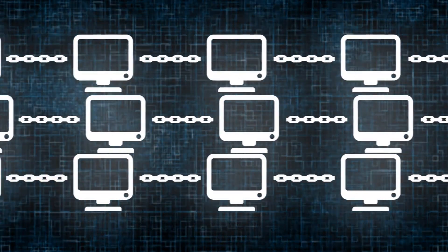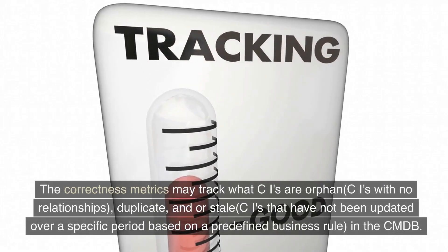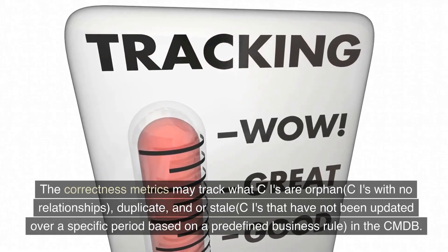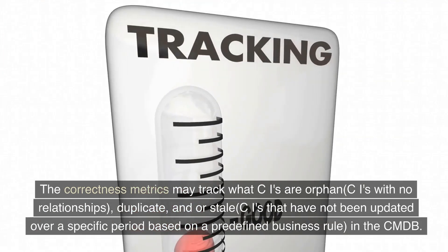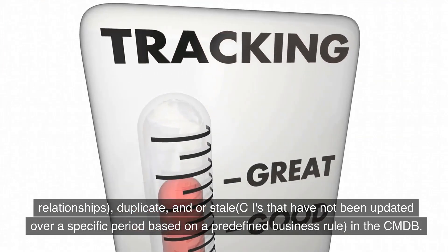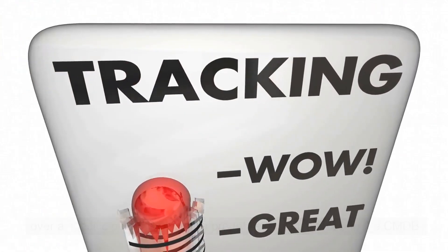The correctness metrics may track what CIs are orphaned, CIs with no relationships, duplicate, and or stale, CIs that have not been updated over a specific period based on a predefined business rule in the CMDB.